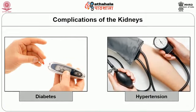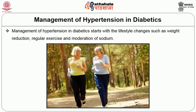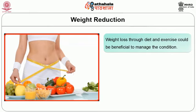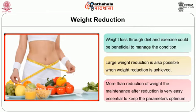Now let us move on to the medical nutrition therapy needed for diabetes and hypertension. Management of hypertension in diabetics starts with lifestyle changes such as weight reduction, regular exercise, and moderation of sodium. Weight loss through exercise could be beneficial to manage the condition. If a person is obese, weight must be reduced based on body mass index. Large weight reduction is possible when good dietary management is achieved, and maintenance after reduction is also very essential to keep the parameters optimum.